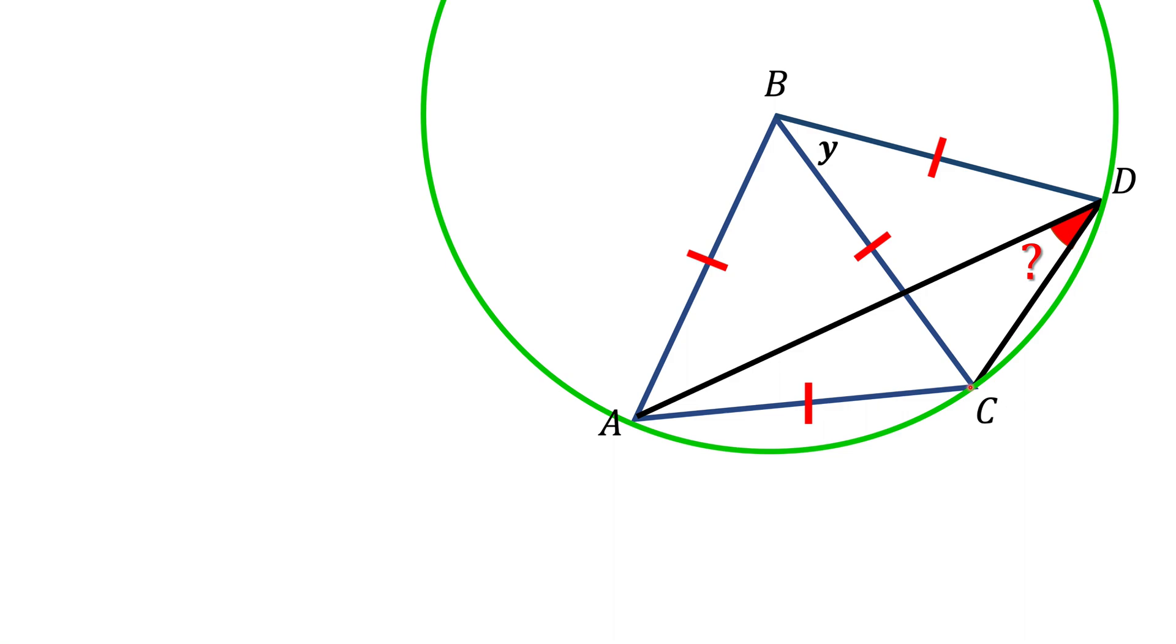And the central angle ABC is subtended by the same arc AC as our inscribed angle ADC. And in this case, we know that the inscribed angle is half of the central angle. Central angle is 60 degrees, so it is not a surprise that ADC is 30 degrees.